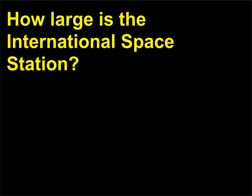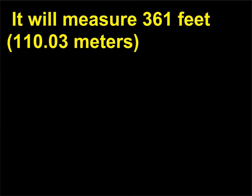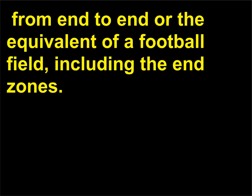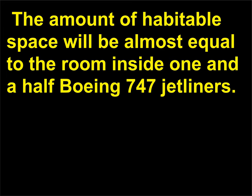How large is the International Space Station? When the ISS is completed, it will weigh 925,000 lb (419,600 kg). It will measure 361 feet (110.03 meters) from end to end, the equivalent of a football field including the end zones. There will be more than 33,000 cubic feet (935 cubic meters) of habitable space, almost equal to the room inside one and a half Boeing 747 jetliners.